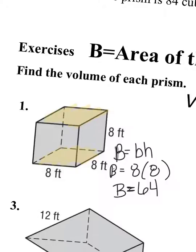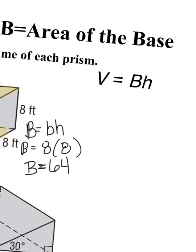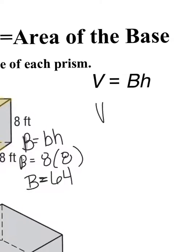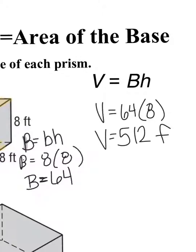The area is 64 feet squared, but we'll do the labeling on our actual answer. The area of the base is 64 and the height of this cube is 8, so the volume equals 64 times 8, which is 512 feet cubed. Units squared means area; units cubed means volume — it's like filling up a cube with something.